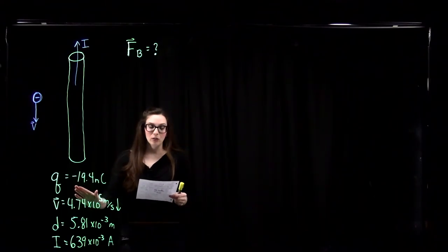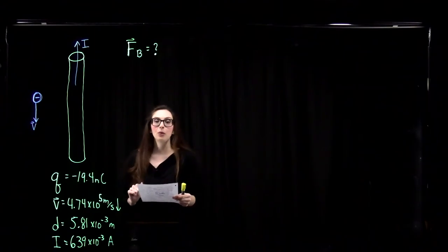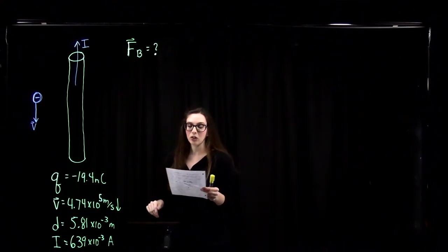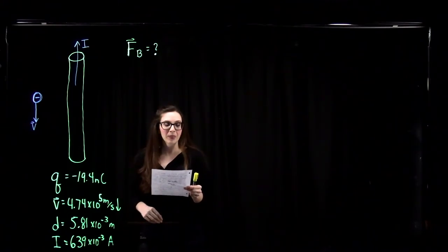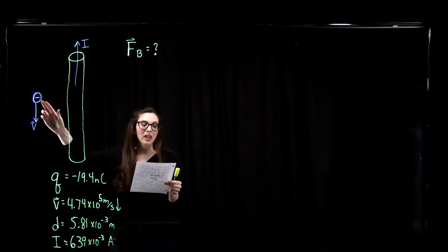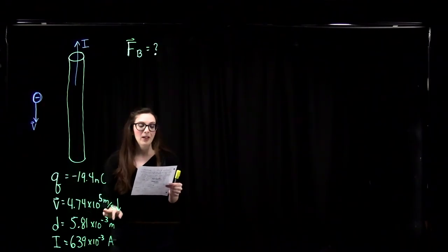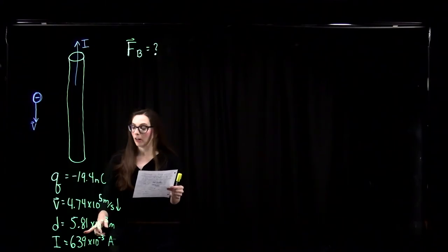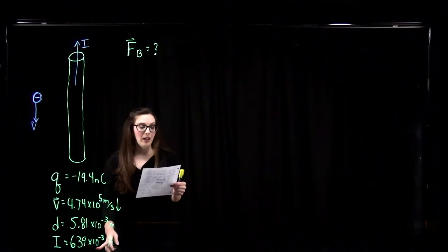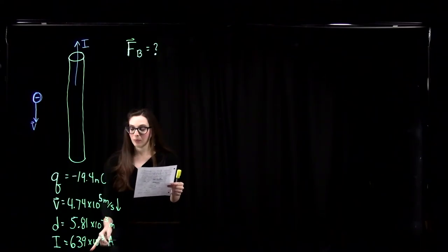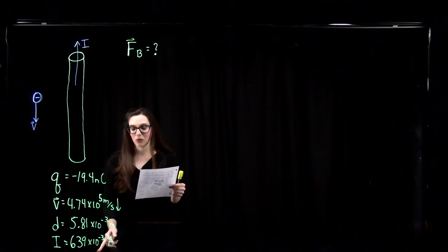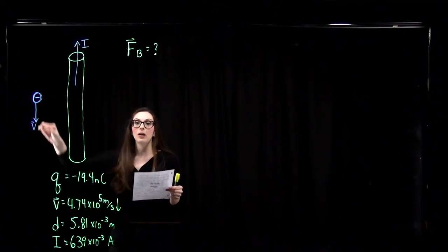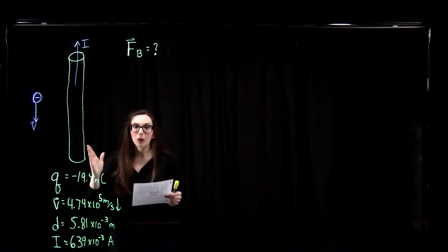We consider a −19.4 nanocoulomb charge traveling next to a current-carrying wire. We need to find the magnitude and direction of the force in nanonewtons on this charge, moving at 4.74×10⁵ m/s at a distance of 5.81 mm from a wire carrying 639 milliamperes. The particle is moving downward and the current in the wire is moving upward.